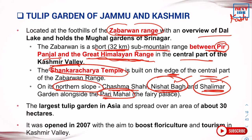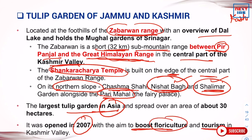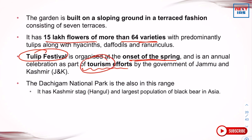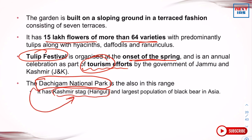India's largest — and Asia's largest — tulip garden is also located here. It was opened in 2007 to boost floriculture and tourism in the Kashmir Valley. The tulip festival is organized at the onset of spring as part of the Jammu and Kashmir government's tourism promotion efforts. The famous Dachigam National Park, home to the Kashmiri Hangul — the Kashmiri Stag — is also located in this range, making it very important from both tourism and ecological perspectives.